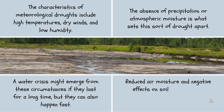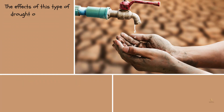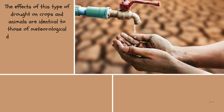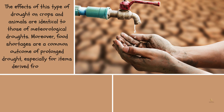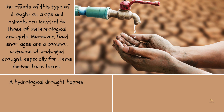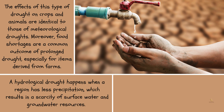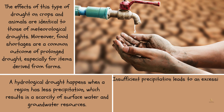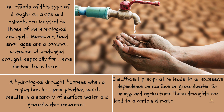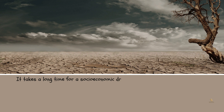Reduced air moisture and negative effects on soil moisture are characteristics of agricultural droughts. The effects of this type of drought on crops and animals are identical to those of meteorological droughts. Food shortages are a common outcome of prolonged drought, especially for items derived from farms. A hydrological drought happens when a region has less precipitation, resulting in a scarcity of surface water and groundwater resources. Insufficient precipitation leads to an excessive dependence on surface or groundwater for energy and agriculture.